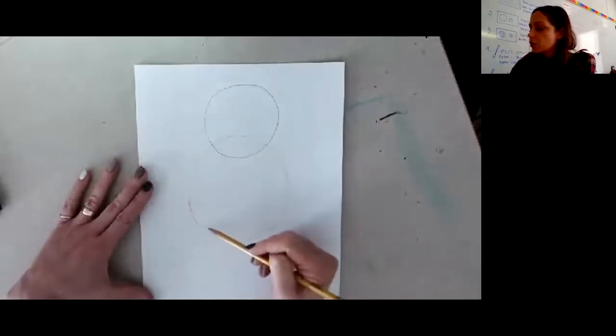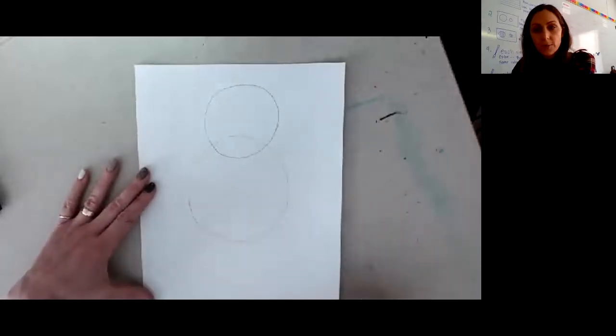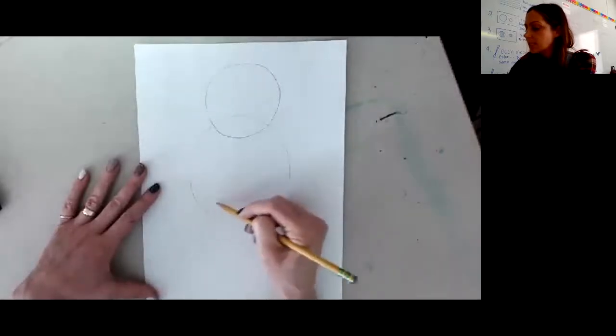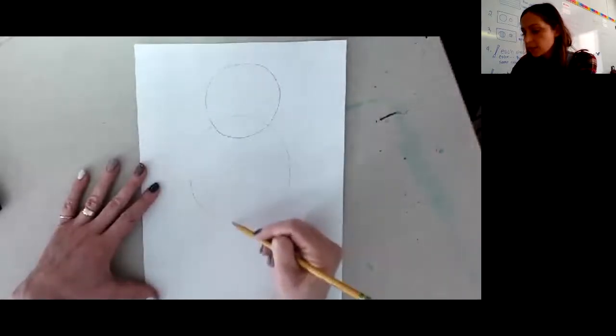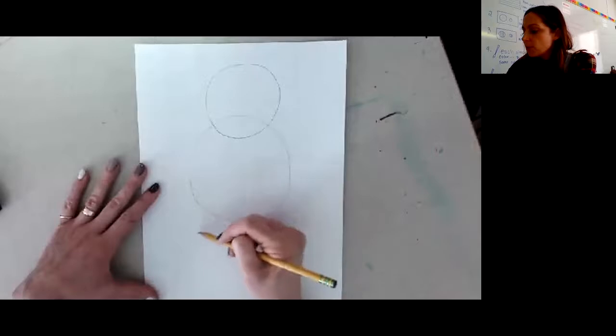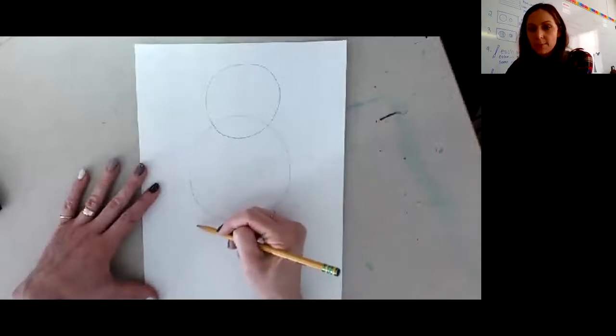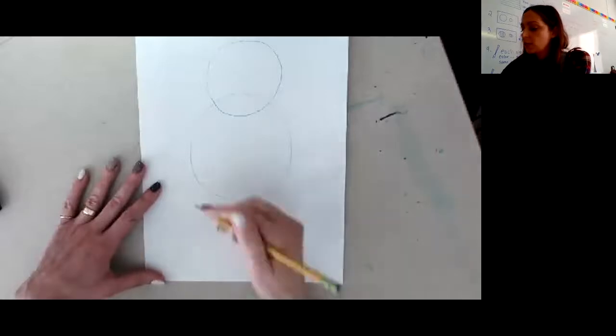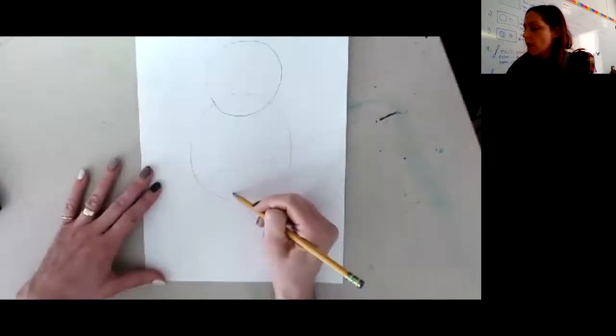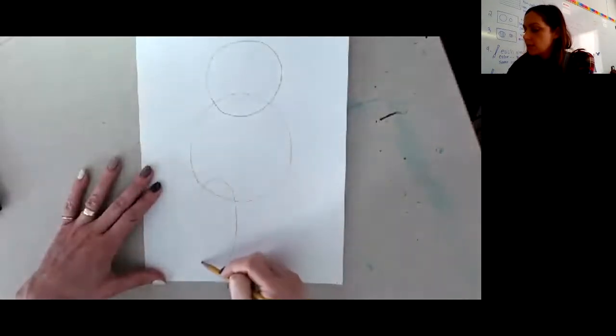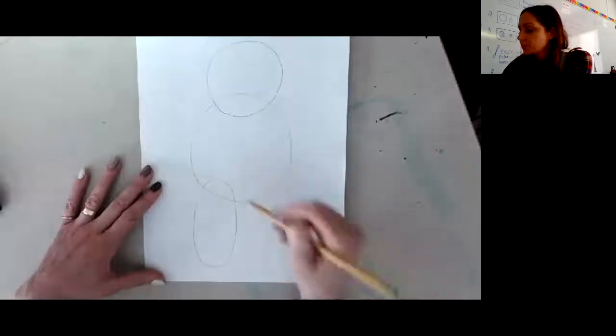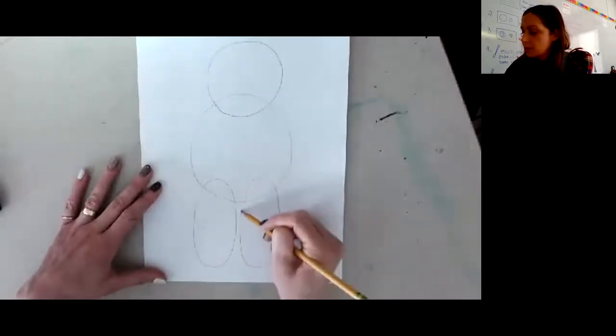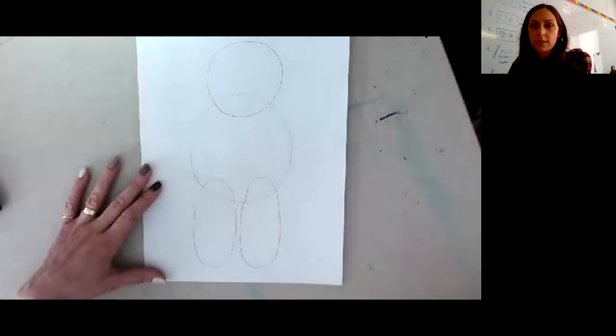I'm going to make two ovals on the bottom for my bear's leg. I'm going to overlap here too. Once again, if you want to practice first, that's fine. And remember, if you make a mistake, that's okay. I also want to make sure I'm leaving some room down here for my bear's feet. So here's one of my bear's legs. And I overlap. And here is the other.